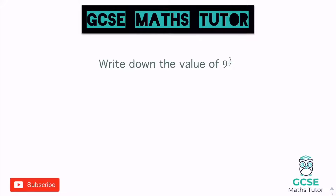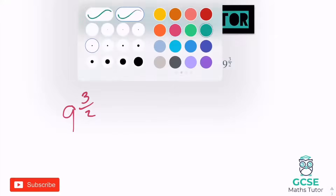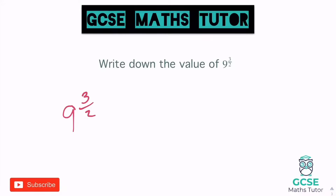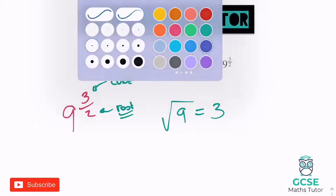Write down the value of 9 to the power of 3 over 2. You might notice straight away we've not got a negative symbol — that just means we're not going to flip it over or write the reciprocal. On the bottom we've got a 2, so it's a square root; on the top we've got the normal power of 3, so it's going to cube it. The square root of 9 is 3, and then 3 cubed — 3 times 3 is 9, times 3 again is 27. So my final answer is 27, remembering I don't have to flip it over because there's no negative.